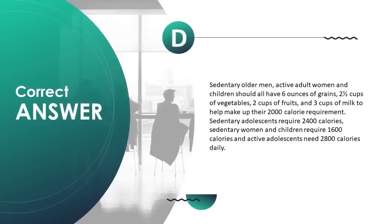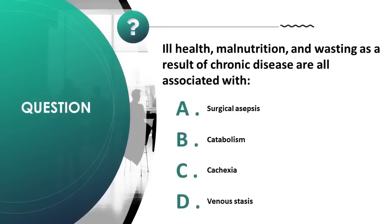To meet the 2000 calorie requirement, they need six ounces of grains, two and a half cups of vegetables, two cups of fruits, and three cups of milk. Sedentary adolescents require 2400 calories, sedentary women and children require 1600 calories, and active adolescents need 2800 calories daily.